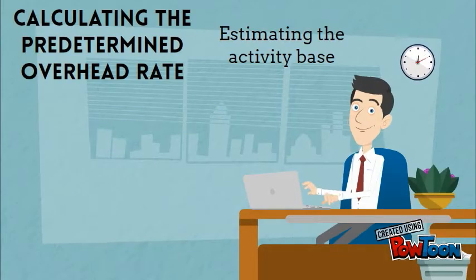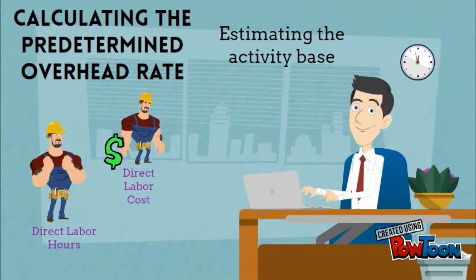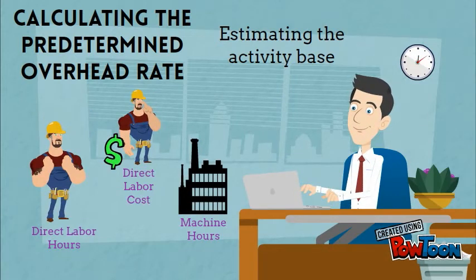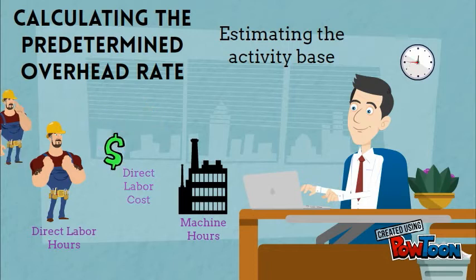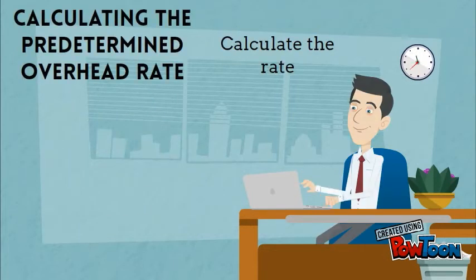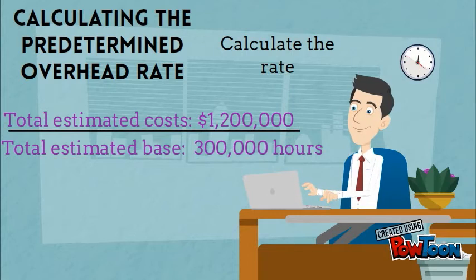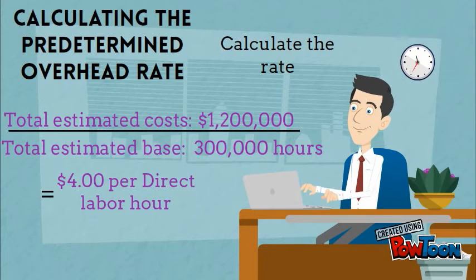Next, management has to estimate the annual usage of the appropriate activity base. The most common choices are direct labor hours, direct labor cost, or machine hours. Management will choose the most appropriate base and estimate the total usage for the year. Lastly, we take the total estimated overhead costs of $1.2 million and divide them by the total estimated base of 300,000 direct labor hours to calculate a predetermined overhead rate of $4 per direct labor hour.